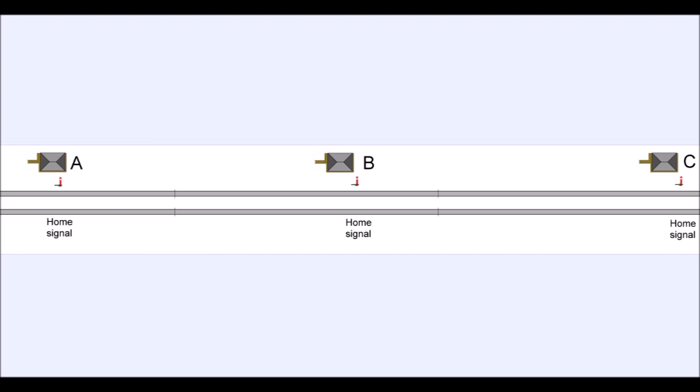A block section is the bit between the signal outside signal box A and the signal outside signal box B. And that section between A and B is controlled by B. He gives permission to allow a train to go into it.